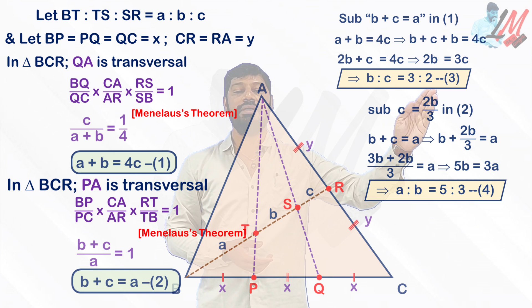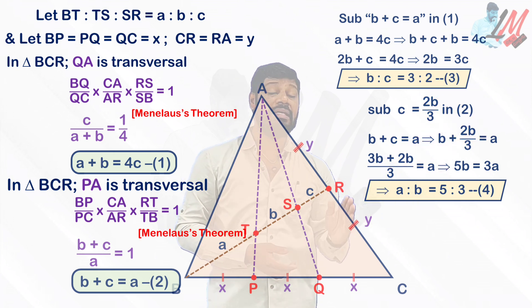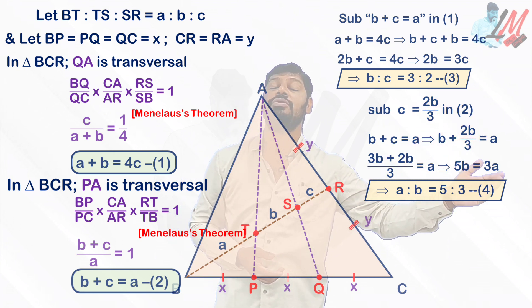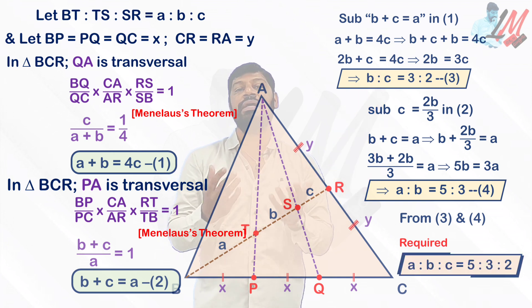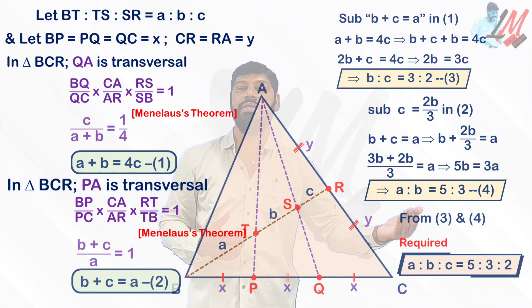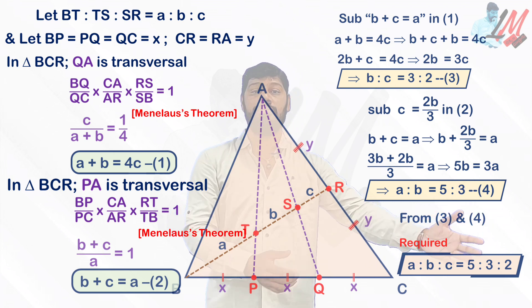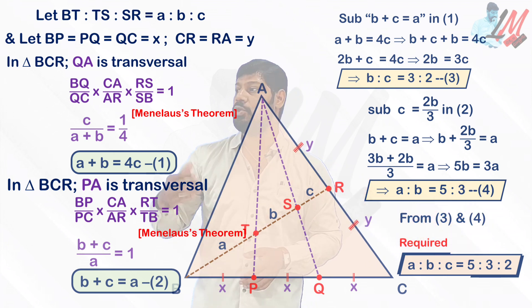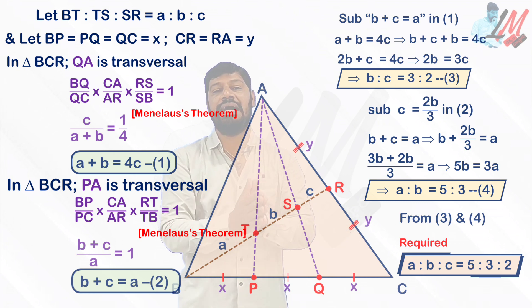What we got: B is to C equal to 3 is to 2 we got, and A is to B equal to 5 is to 3. So from these two you can get the ratio between A is to B is to C. What you are going to get: A is to B is to C equal to 5 is to 3 is to 2. This is the required ratio of whatever they asked in the diagram.